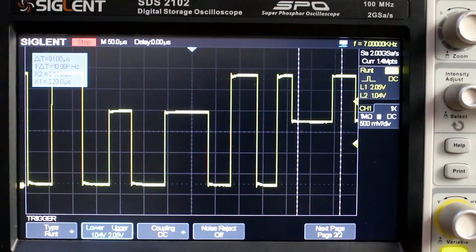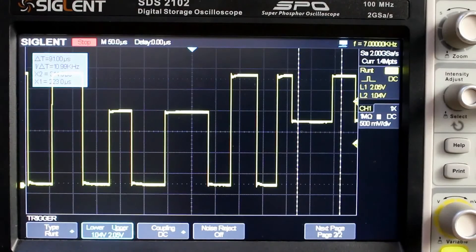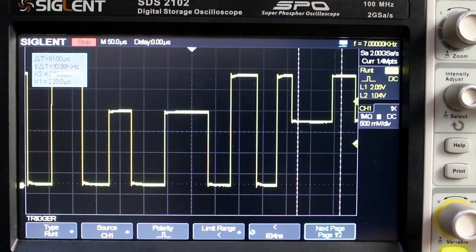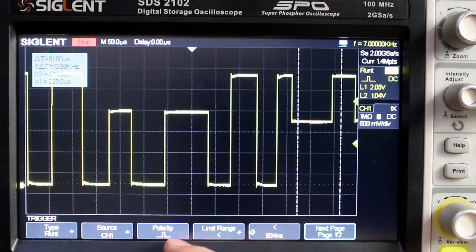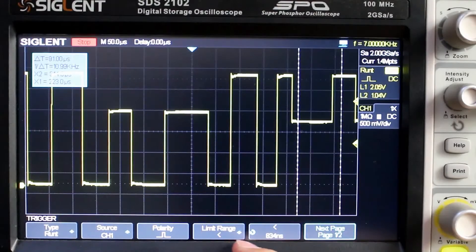So you can see both the positive and negative runt pulses will be within our range, but we're setting the polarity to positive.